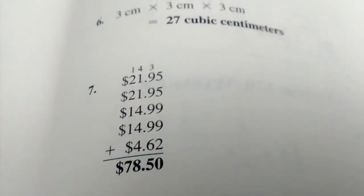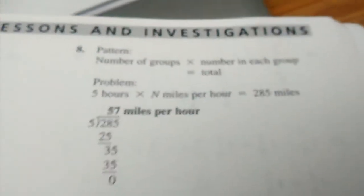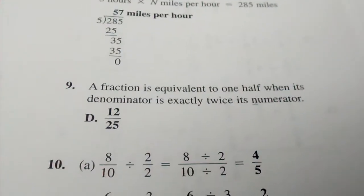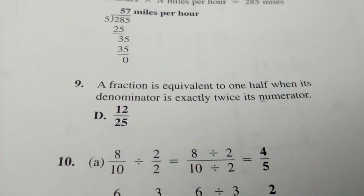Number 7, $78.50. Number 8, 57 miles per hour. Number 9, D, 12 twenty-fifths.